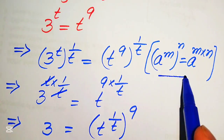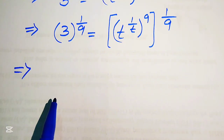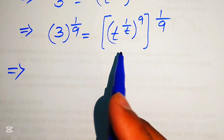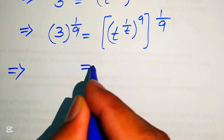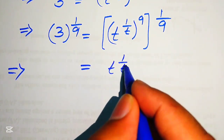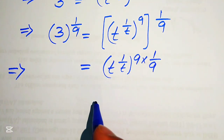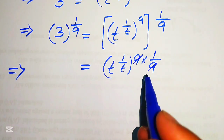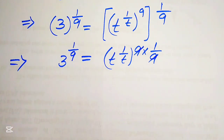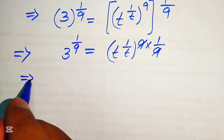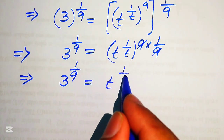We again apply the exponent law on the right-hand side and multiply the exponents: t to the power of (1/t), exponent 9 times 1-over-9. This 9 cancels with the 9, and on the left-hand side we have 3 to the power of 1-over-9. So we obtain: 3^(1/9) = t^(1/t).